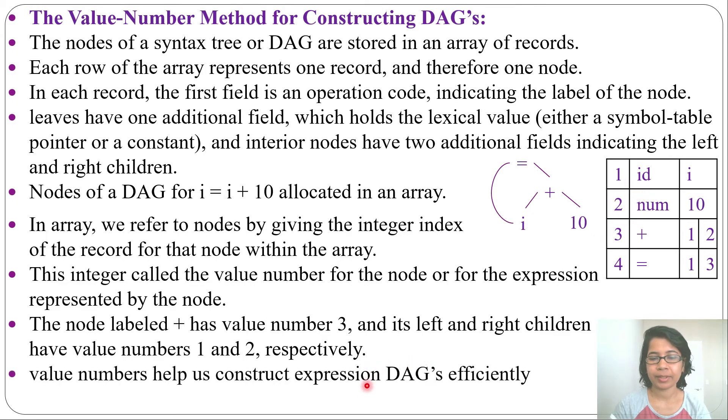Value numbers help us construct DAG efficiently. Just we are storing the nodes of the DAG into an array. One row is for one node. First column is for value number. Second column is for the label of the node. Next, there can be 1 or 2 additional fields according to leaf or interior node. For leaf, there will be 1 additional field. For interior node, there will be 2 additional fields.